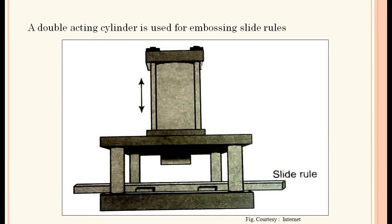Applications include part detection, press fitting, and clamping of parts. A double acting cylinder is used for embossing slide rules — the cylinder rod extends to press the embossing die onto the slide rule and then retracts. The direction of movement is shown in this picture.